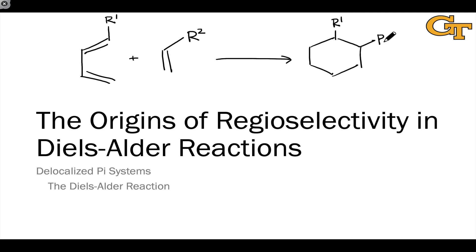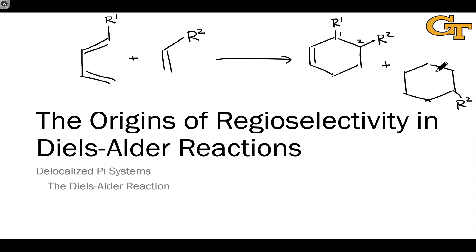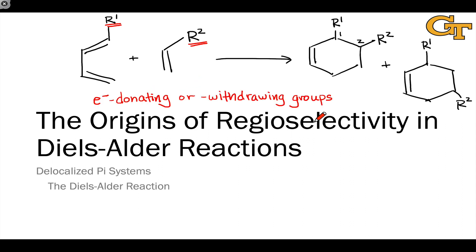In one of the possible products, R1 and R2 end up relatively close to one another in a 1,2 relationship within the cyclohexene product. In the other possible product, R1 and R2 end up in a 1,3 relationship, and this comes from essentially flipping over the dienophile, which results in a linkage between different carbons where the new sigma bonds form. In Diels-Alder reactions that occur at a high rate, R1 and R2 are typically electron donating and withdrawing groups, and it's the donating or withdrawing nature of these groups that really dictates the regiochemical outcome — which constitutional isomer is the major product.